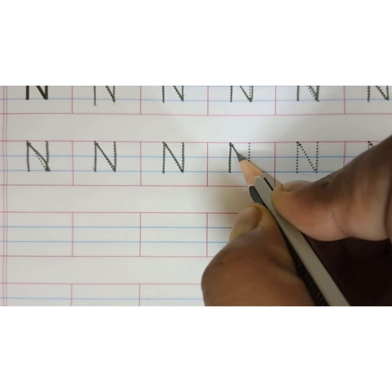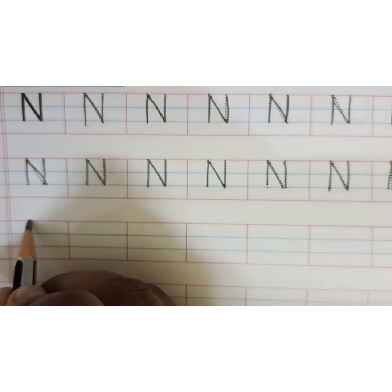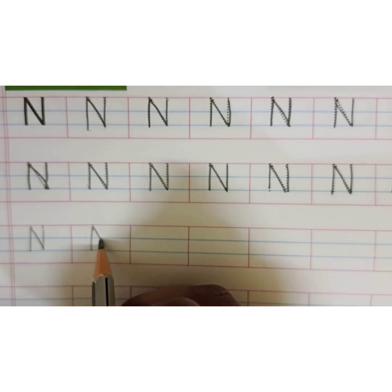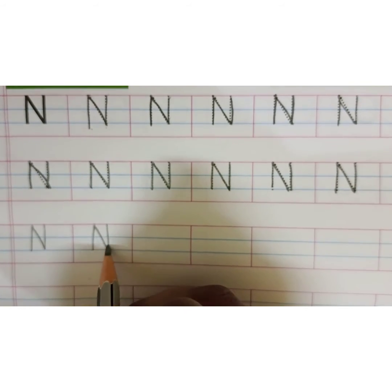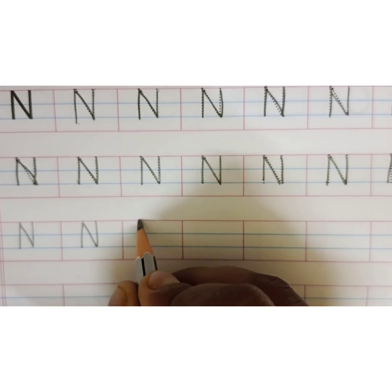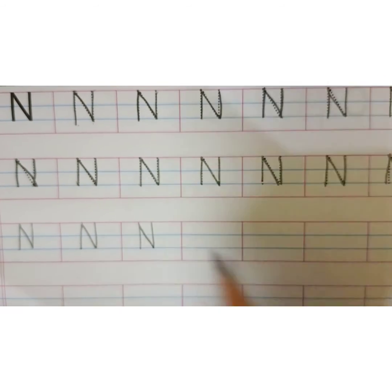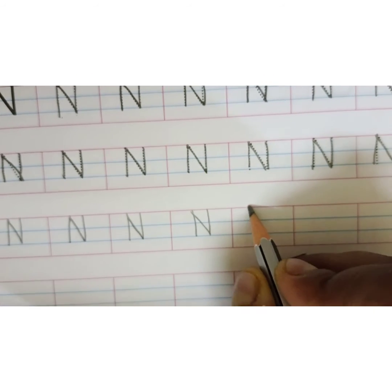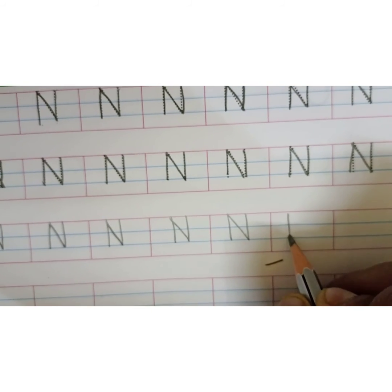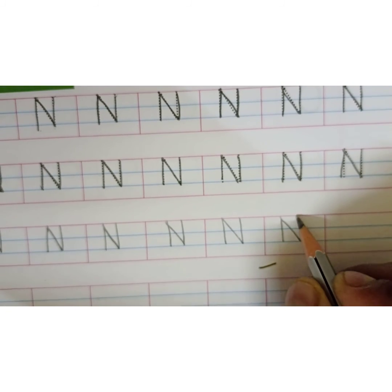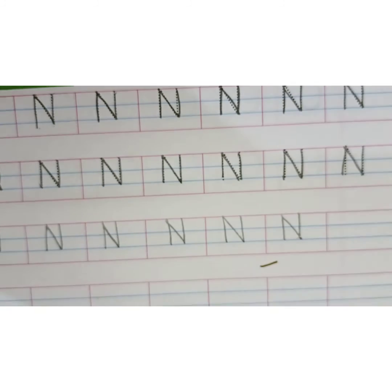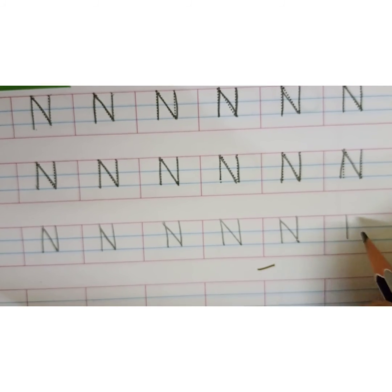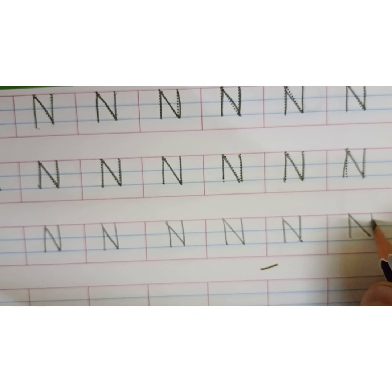Now let's make it quickly. Standing line, slanting line, standing line. Standing, slanting, standing. N for nest. N for nose — nose is to smell good and bad. Dear parents, do the practice at home. Till then, take care and goodbye. Bye-bye!